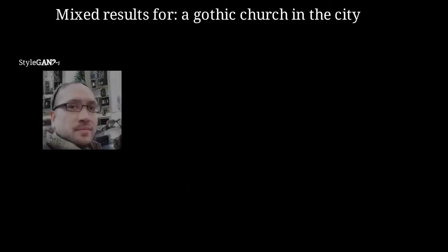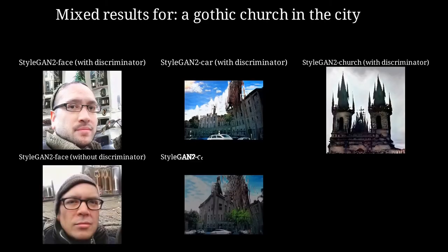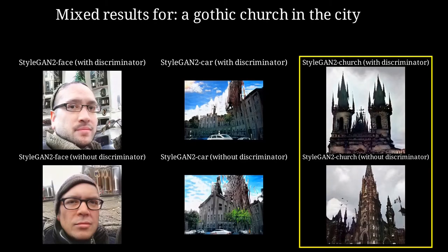In the same way, when using as target text 'a Gothic church in the city', only StyleGAN2 Church is able to generate the correct image. Some Gothic artifacts are also present in StyleGAN2 Face without discriminator.